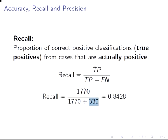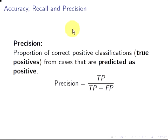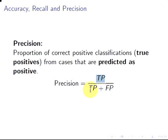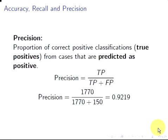The last metric is precision: the total number of correct positive classifications — true positives — from the number of cases predicted as positive. It's 1,770 divided by 1,770 plus 150, giving 0.9219, or 92%. Accuracy was 0.9952, which is higher. When judging a predictive model, accuracy gives you an easy pass, whereas recall and precision are more stringent measures of how good your classification system is — which is why they are also quite important.